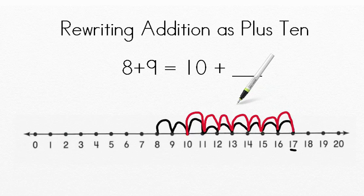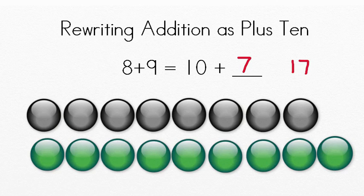So 8 plus 9, which we know is 17, means that equals 10 plus 7. Because 10 plus 7 equals 17. So now we've learned that 8 plus 9 equals 17, or the same as 10 plus 7 equals 17.